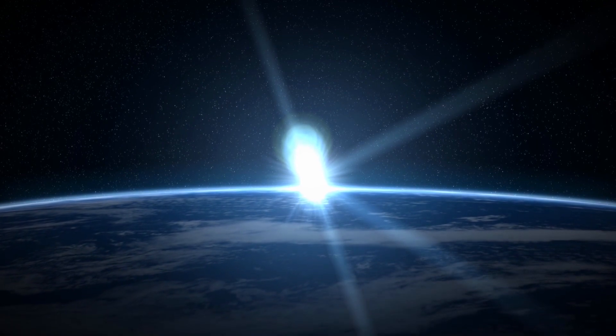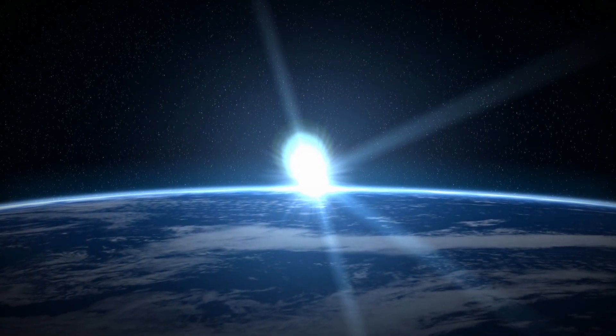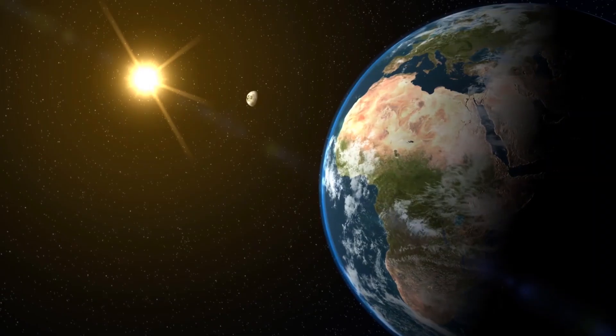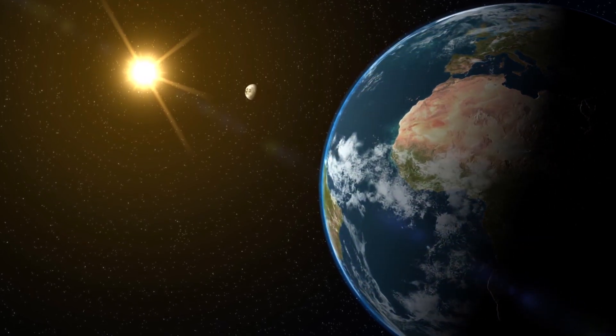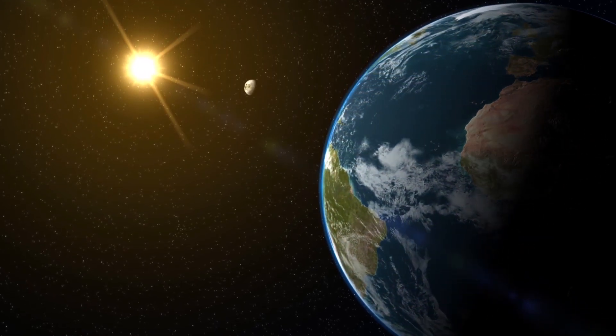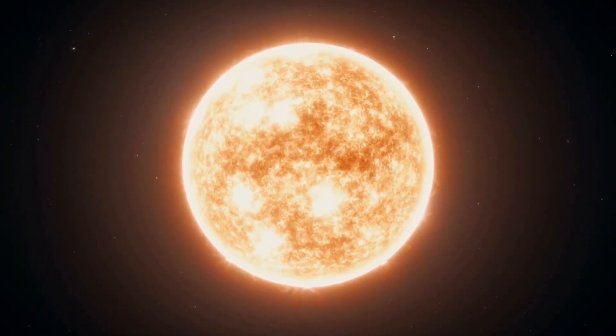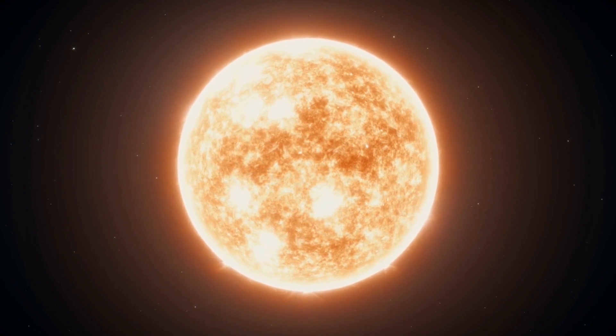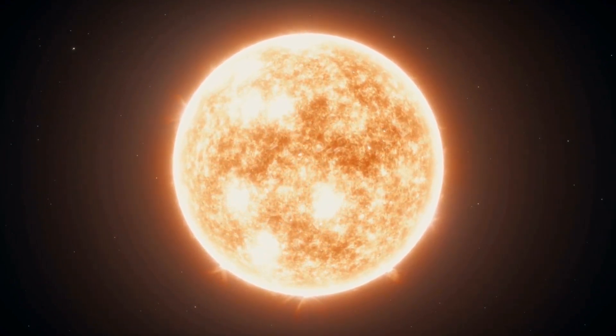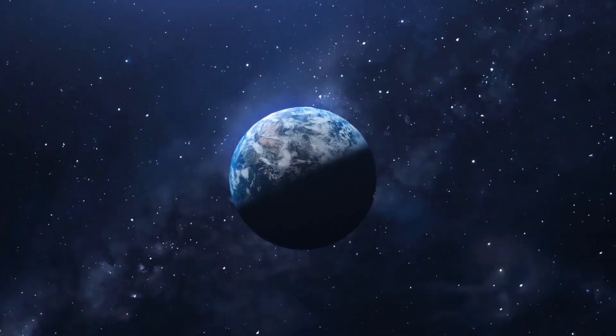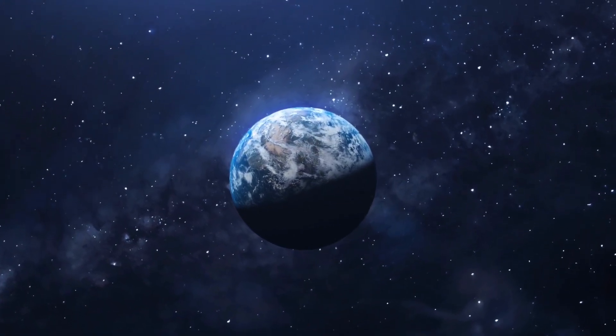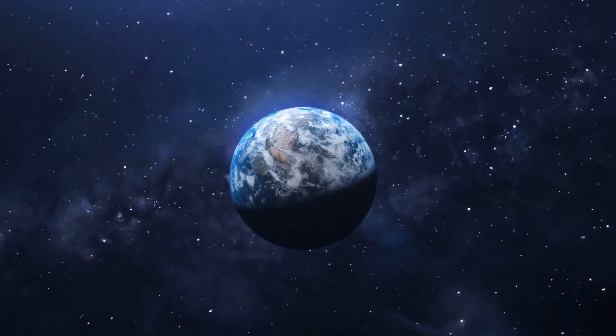Earth constantly receives energy from the Sun and radiates it back into space. For the planet's temperature to remain constant, the net heat it receives from the Sun must be balanced by the outgoing heat that it gives off. Since the Sun is hot, it gives off energy in the form of short-wave radiation at mainly ultraviolet and visible wavelengths. Earth is much cooler, so it emits heat as infrared radiation, which has longer wavelengths.